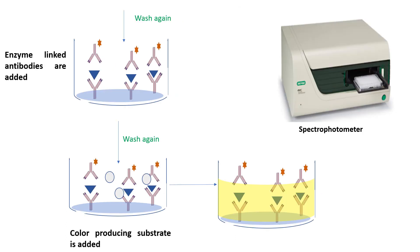After adding the sample, keep this plate again in the incubator. After an hour, take out the plate and wash it with washing buffer. In the next step, add the secondary antibody or enzyme-linked antibodies, keep it in the incubator for some time, then take out the plate and wash again. Then add the color-producing substrate, which reacts with the enzyme and produces a particular color. Insert this plate in the colorimetric reader and observe the reading.